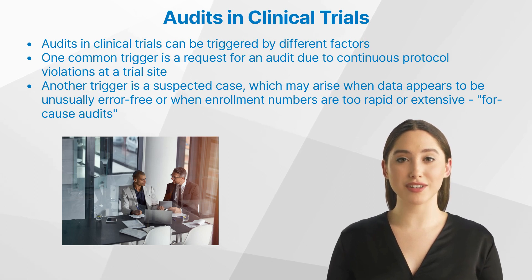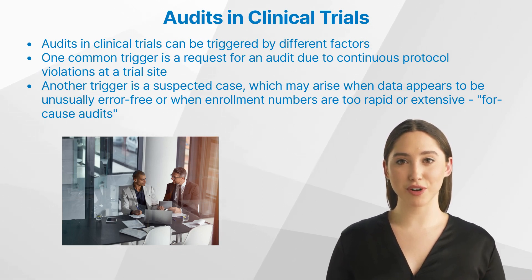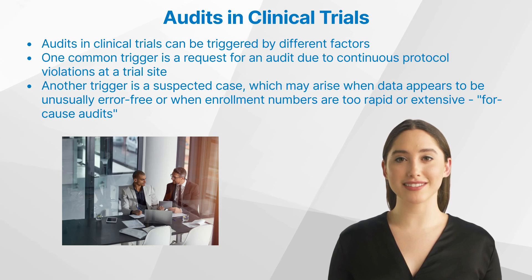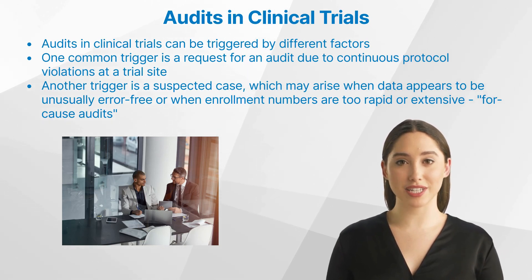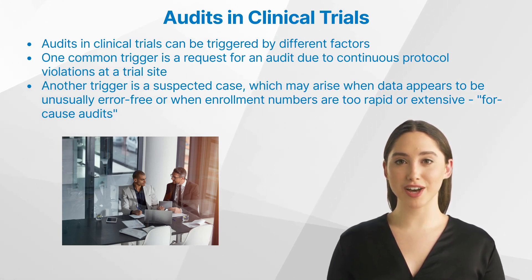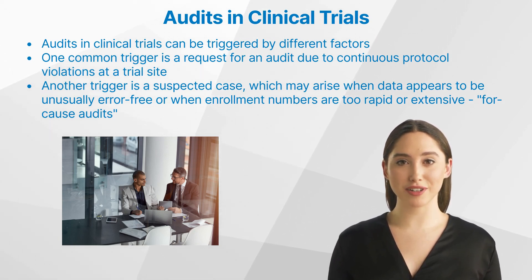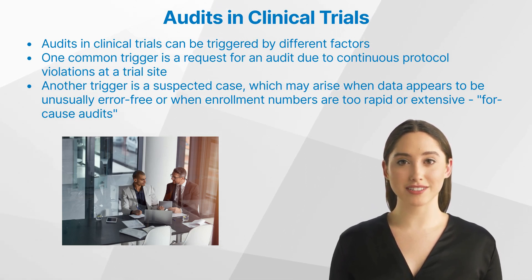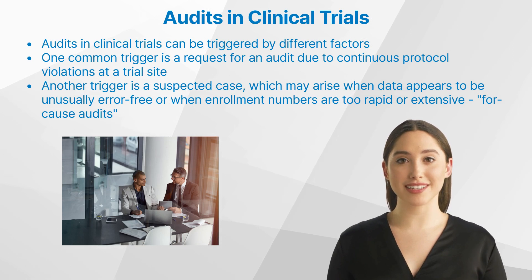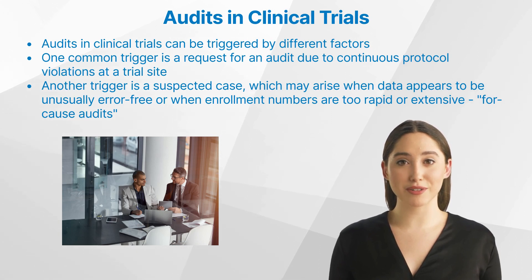The audit process involves several key steps. Firstly, auditors check the existence and accuracy of the informed consent forms for all enrolled subjects. This can be a time-consuming task, particularly in large trial sites with numerous participants. The investigator site file is also thoroughly examined to ensure proper maintenance and completion of essential documents. Auditors perform source data verification by assessing a sample of subjects to confirm the accuracy of data, storage of study medication, and handling of laboratory samples. They also verify the qualification certificates of study personnel to ensure adequate training and compliance.